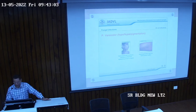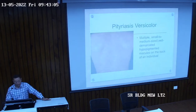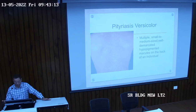Hyperpigmented macules with branny scales are seen in pityriasis versicolor. Multiple small to large, well-demarcated hypopigmented macules are typically seen on the back of the individual.